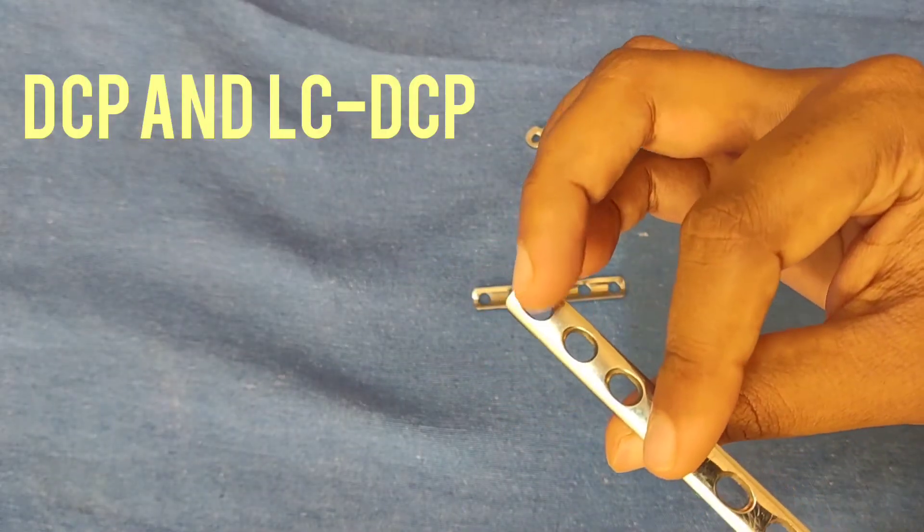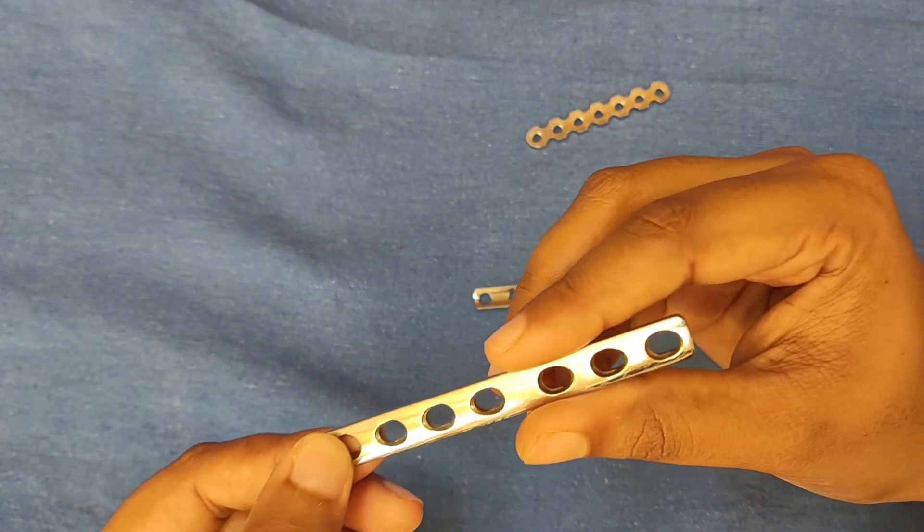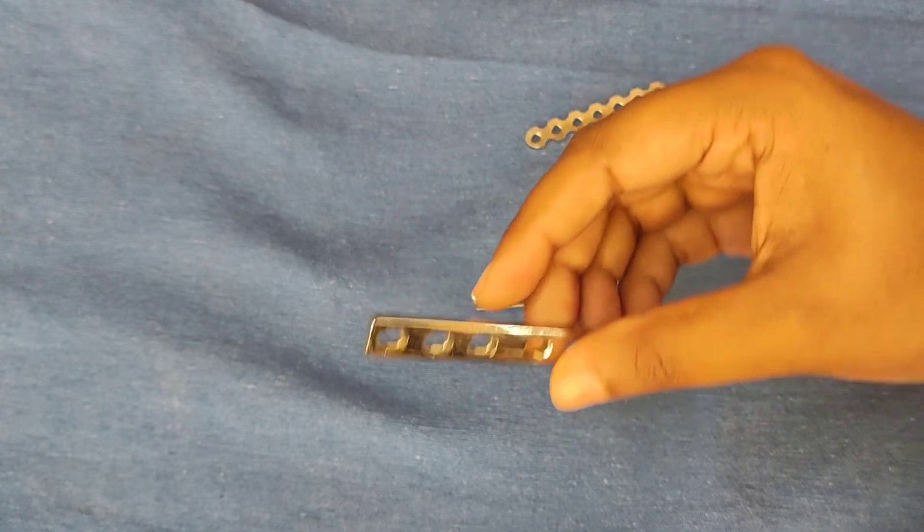Now you can see a dynamic compression plate. In a dynamic compression plate there are no locking holes. Small, narrow and broad DCPs are available.